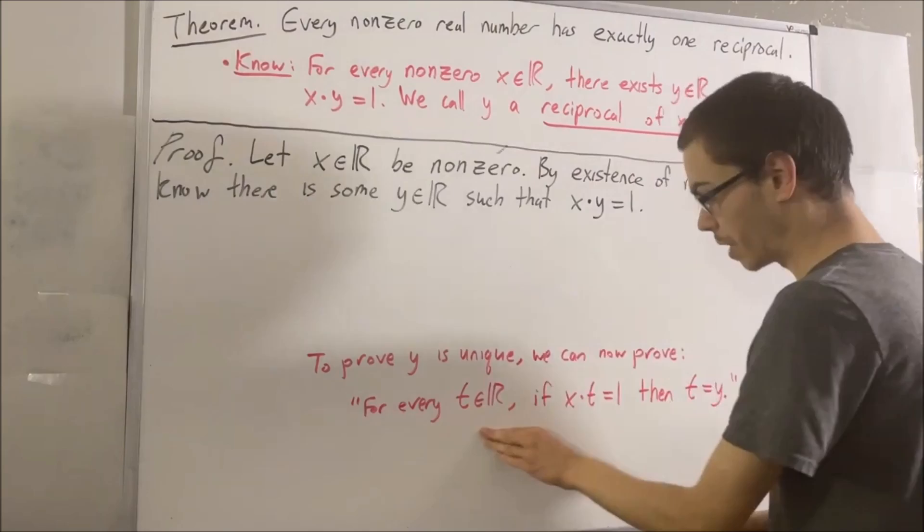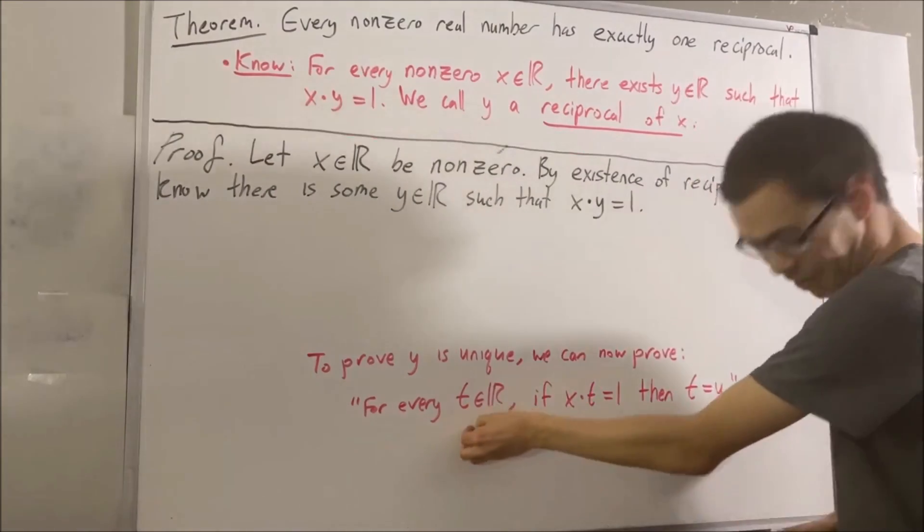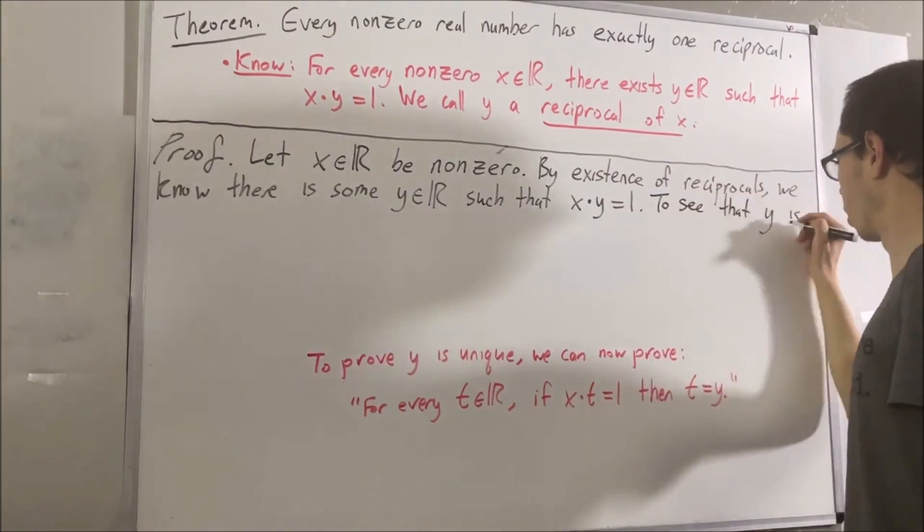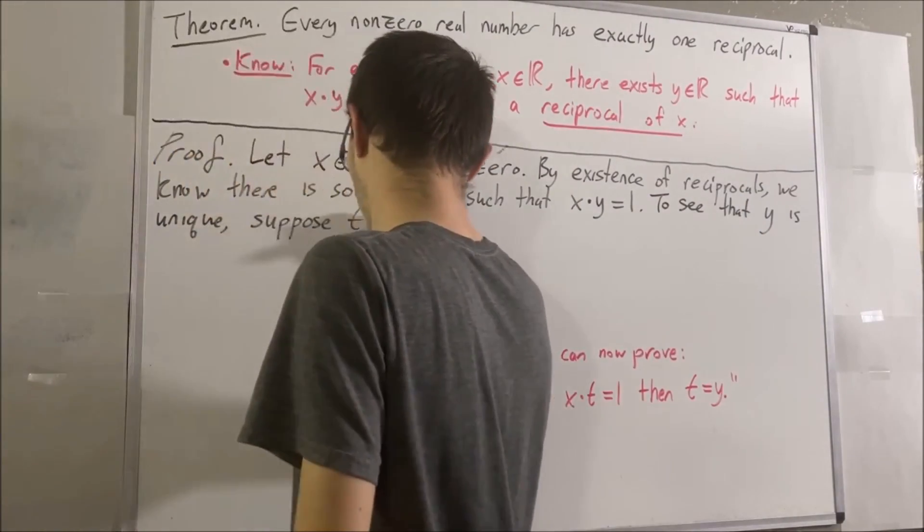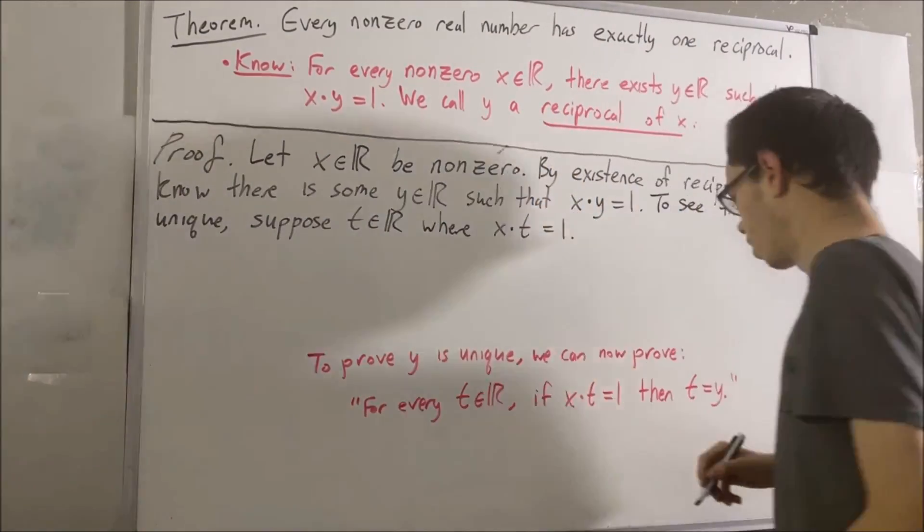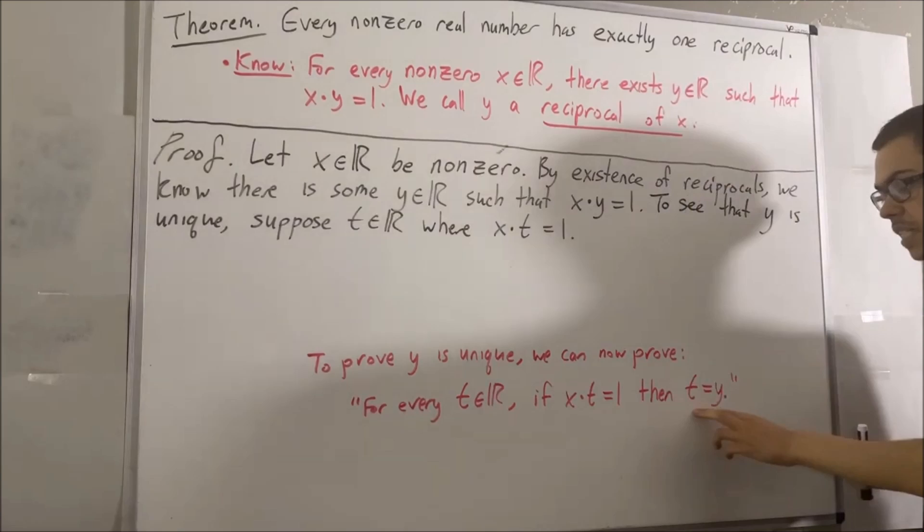We're trying to prove a statement about every real number. So give me an arbitrary real number. I'll call it t. And assume t satisfies this condition. Our goal is to deduce that t is equal to y.